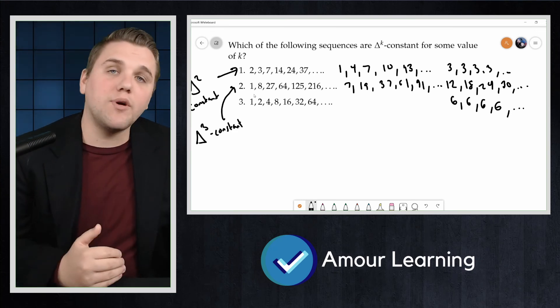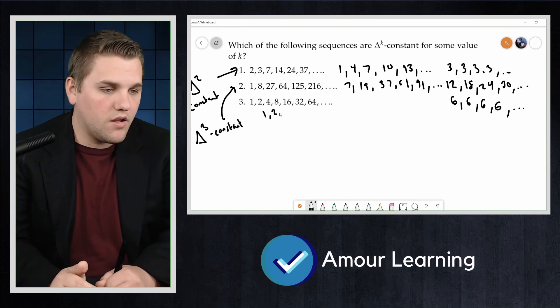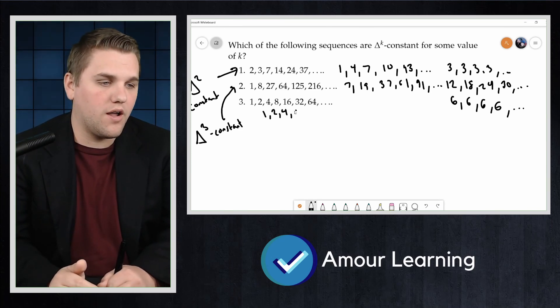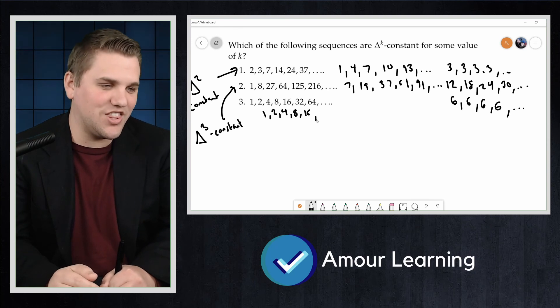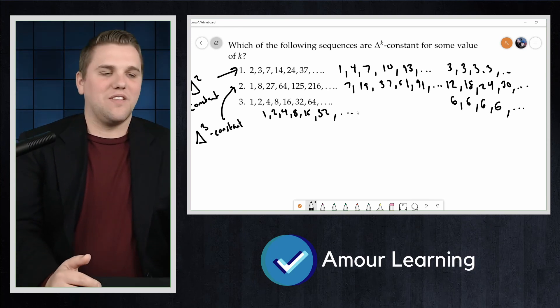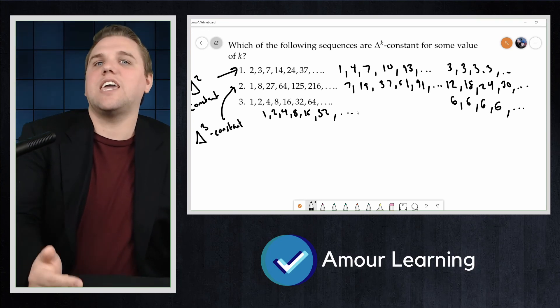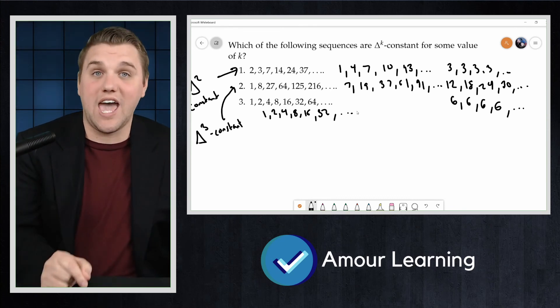For number 3, if we take first differences, we get 1, 2, 4, 8, 16, 32, and so forth. That's the sequence we started with. So taking second differences will give us the same sequence again.